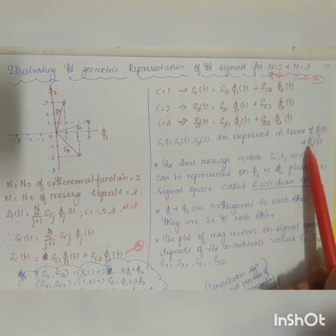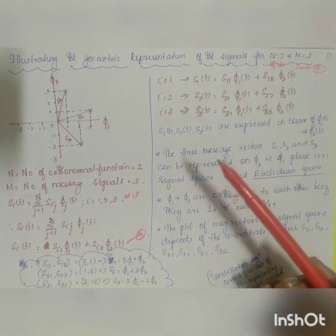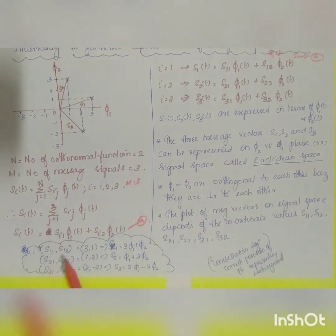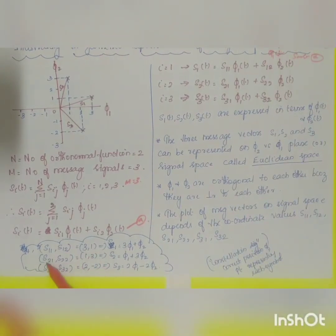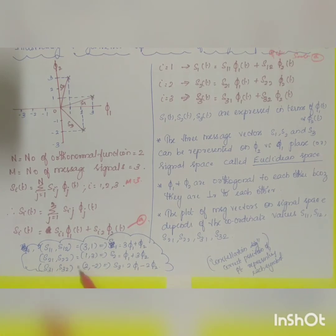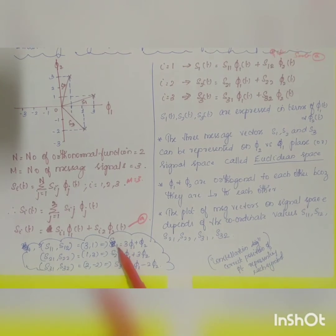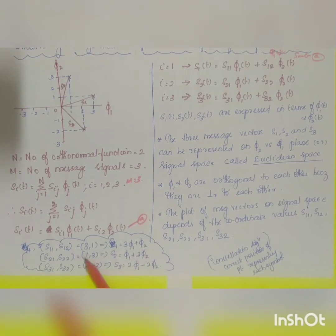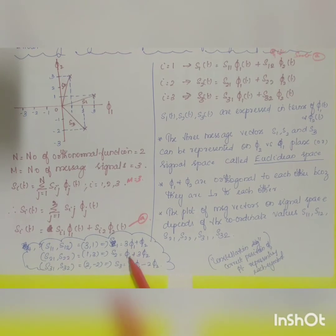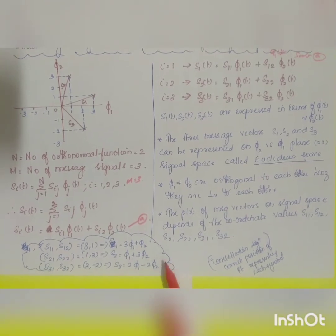Taking an example with specific coordinates: s_11, s_12 = (3, 1); s_21, s_22 = (1, 3); and s_31, s_32 = (2, −2). Then: s1 = 3·phi_1 + phi_2; s2 = phi_1 + 3·phi_2; and s3 = 2·phi_1 − 2·phi_2.